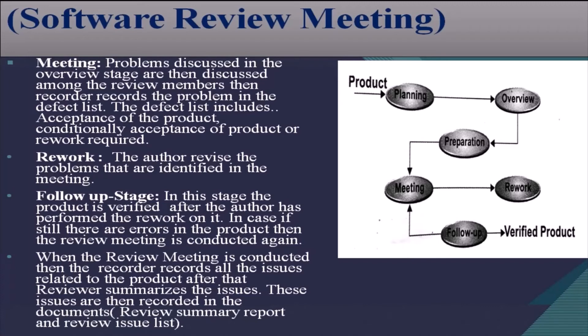The next stage is rework. The author revises the problems that were identified in the meeting. The follow-up stage then follows: the product is verified after the author has performed the rework on it. If there are still errors in the product, the review meeting is conducted again. The recorder records all issues, and the reviewer summarizes them in the review summary report and the review issue list.